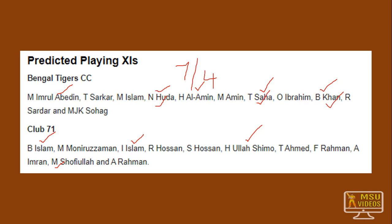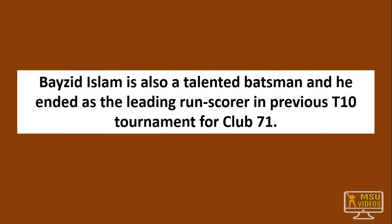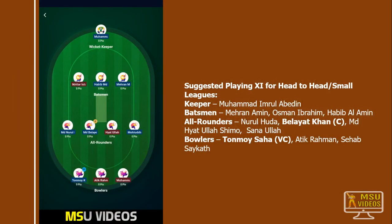Islam is also a very good player. For your first team, from wicket keeper you can select Abidin, then Iftikar, Islam, Habibul, Abin, Mohamar Amin, Nurul Huda, Belayed Khan, Haidulla, Shimo, Sanavulla, and Tonmai Saha.